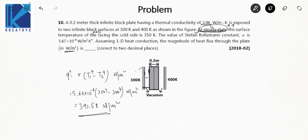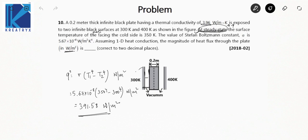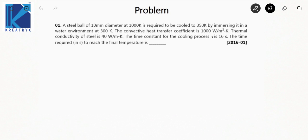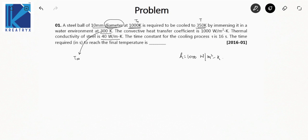Moving on to unsteady state heat transfer. A steel ball of 10 mm diameter at an initial temperature T0 of 1000 Kelvin is required to be cooled to 350 Kelvin (the required temperature T). It is cooled by immersing it in a water environment at T∞ = 300 Kelvin. The convective heat transfer coefficient h is 1000 W/m²K, thermal conductivity k is 40 W/mK, and the time constant τ is 16 seconds. Find the time required to reach 350 Kelvin.